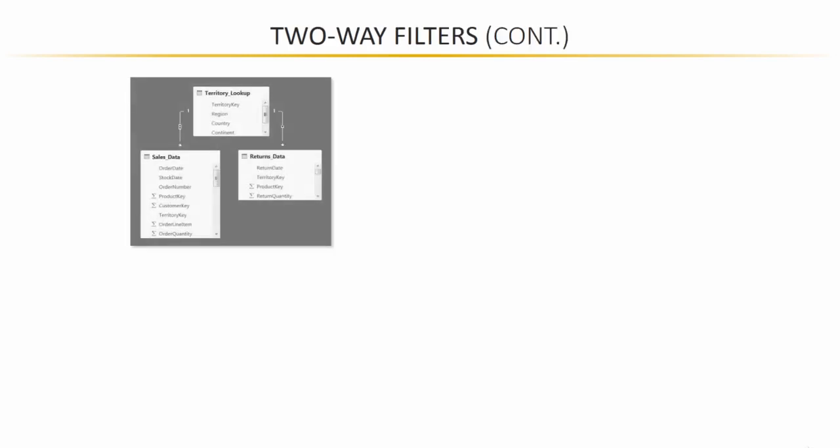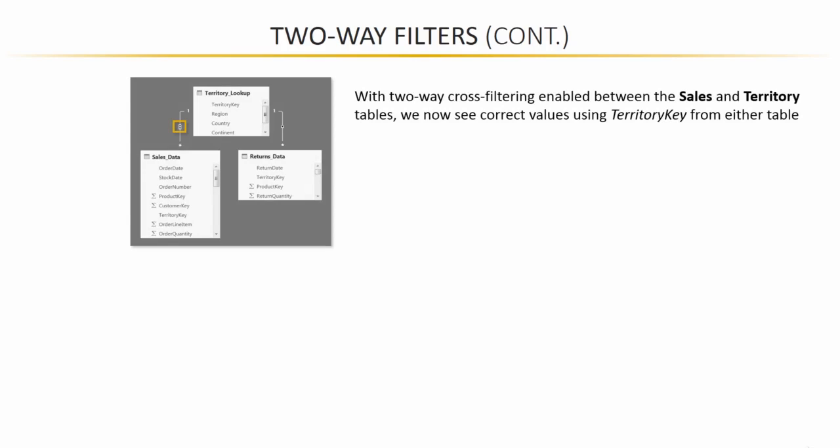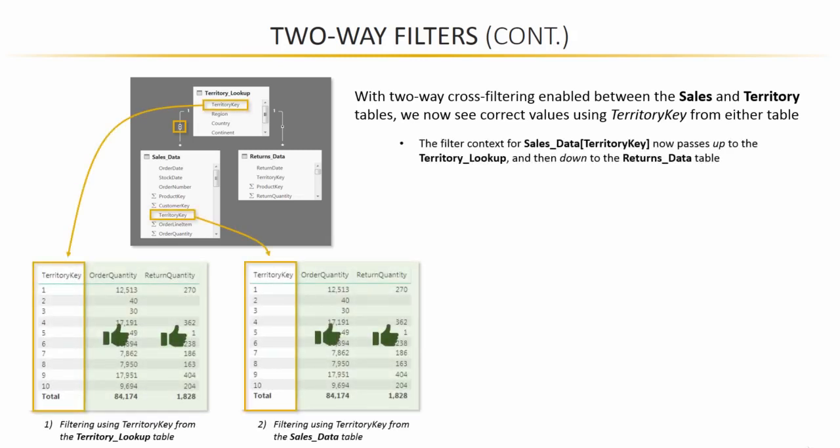So let me show you what that looks like. Here we go, same three-table model. The only difference is that one bi-directional filter between territory and sales.